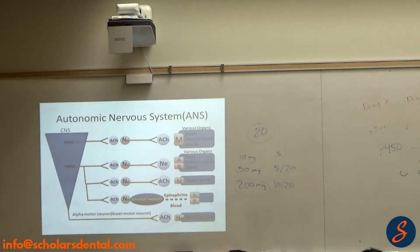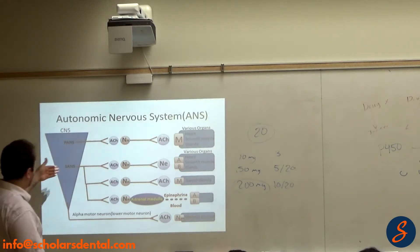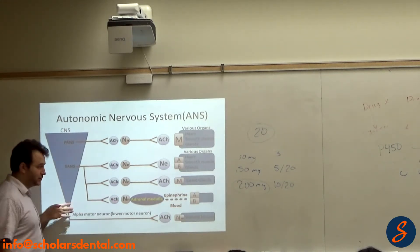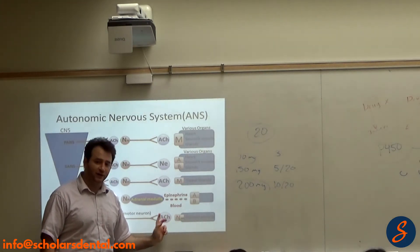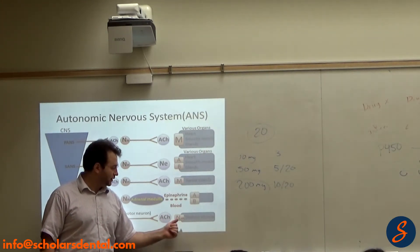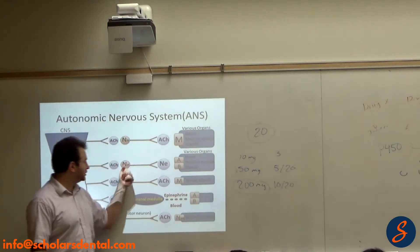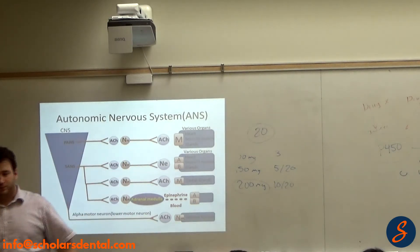We have the alpha motor neuron that doesn't have the ganglion and it goes directly to the skeletal muscle. There we have acetylcholine and nicotinic. We put NM for nicotinic muscle to differentiate it from ganglions.